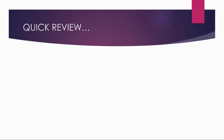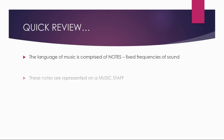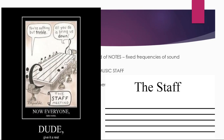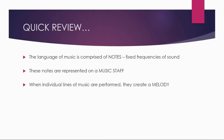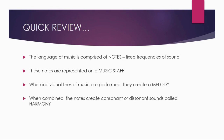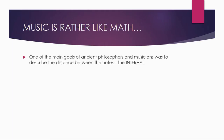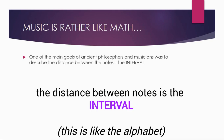Before we get into it, let's do a quick review. The language of music is comprised of notes — fixed frequencies of sound — and these notes are represented on the music staff in five lines and four spaces. Individual lines of music, when performed, are called a melody, and if you combine those notes, it creates consonant or dissonant sounds that we call harmony. Music is kind of like math. One of the main goals of ancient philosophers and musicians was to describe the distance between the notes, and we call this distance an interval.